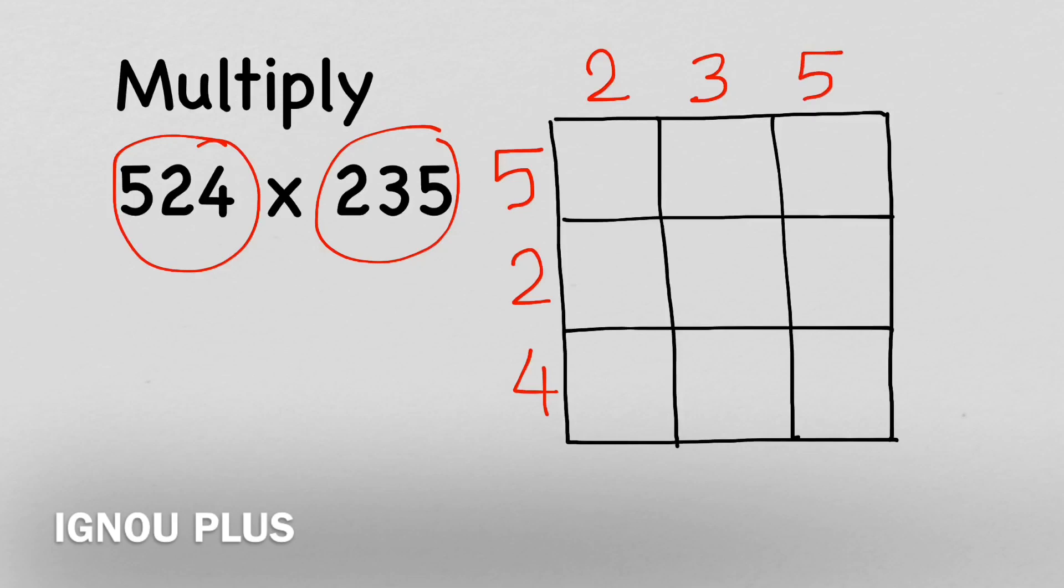I have written one number in rows and the other one in columns. This is the process. First of all, you have to reach here. What happens after that?